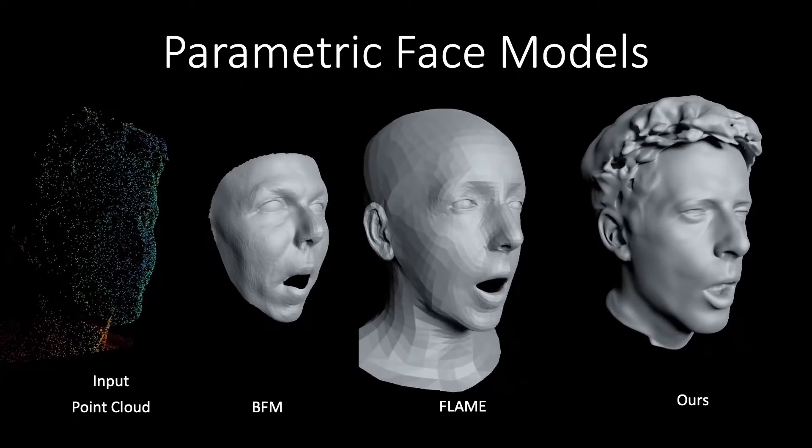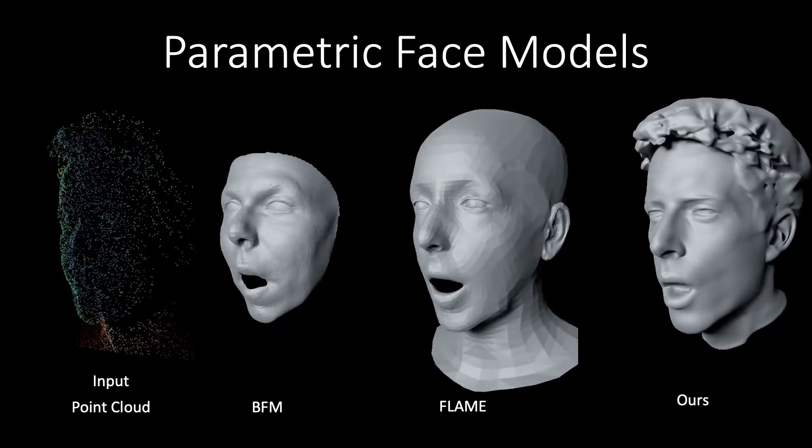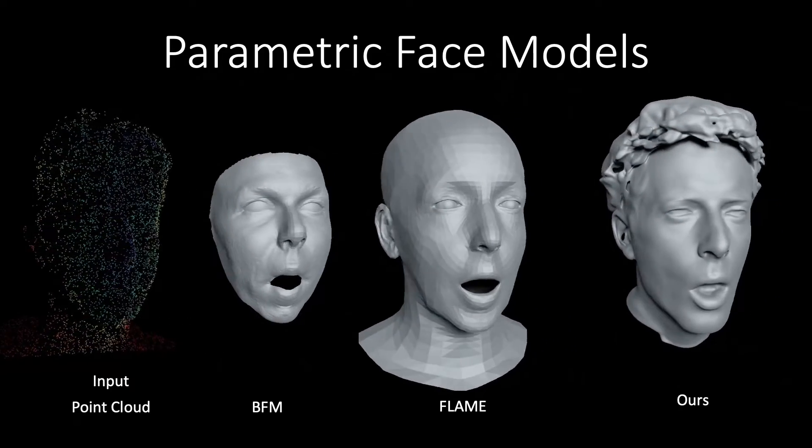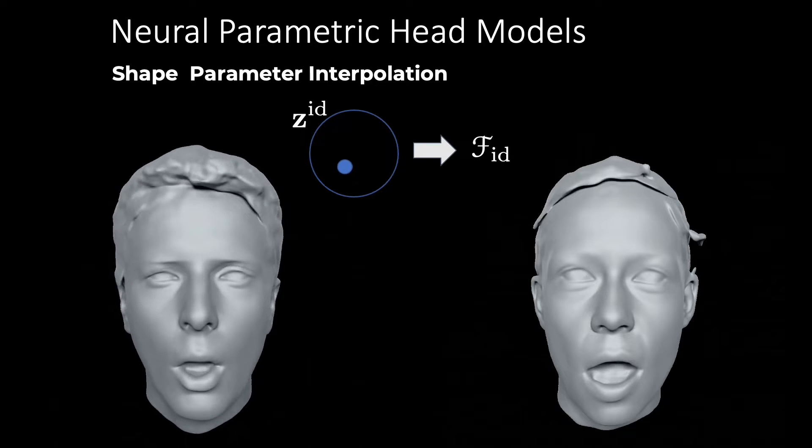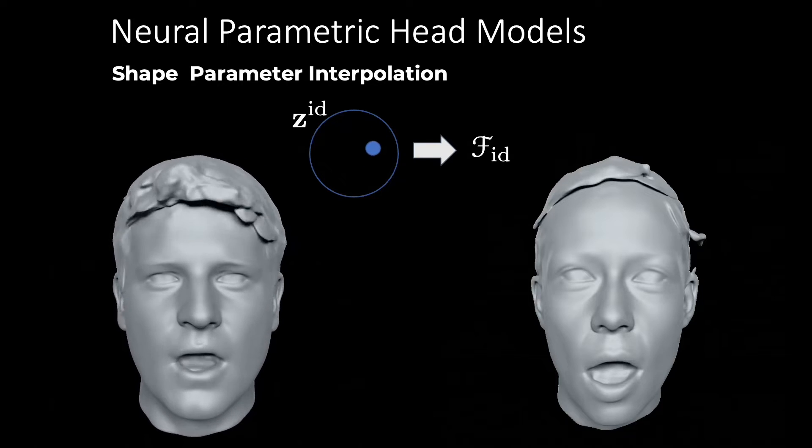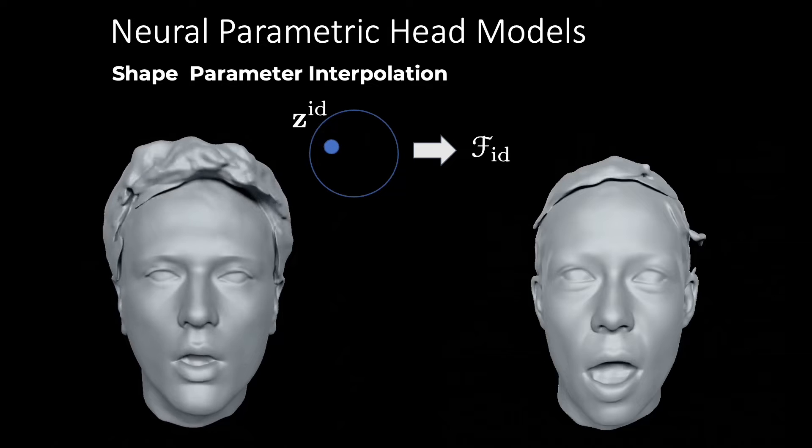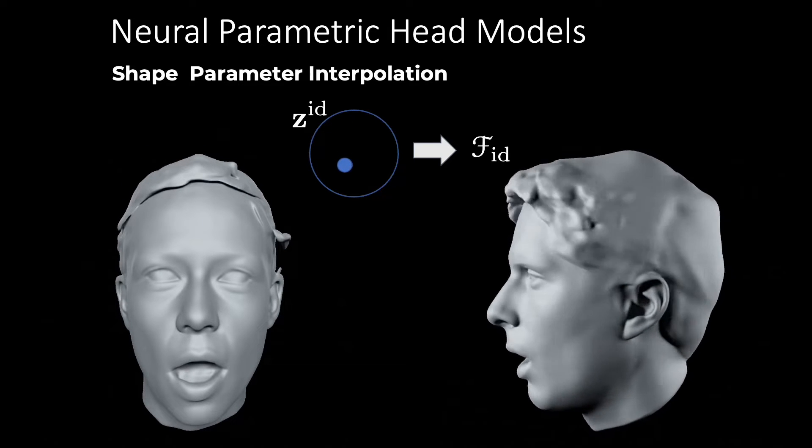We propose a neural method that is capable of generating high-quality reconstructions of complete human heads. A core quality of our model is the ability to represent a wide variety of identities. Here we show interpolations in the learned shape parameter space.